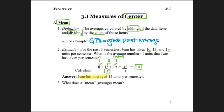So we're saying that Gene has averaged 14 units per semester, and we could also have said Gene has a mean of 14 units per semester. It's all the same thing.